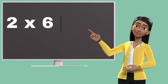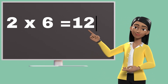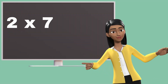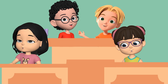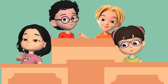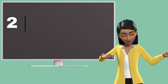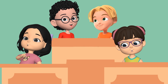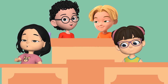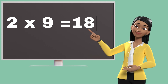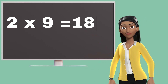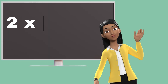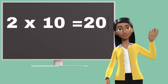Two sixes are twelve. Two sixes are twelve. Two sevens are fourteen. Two sevens are fourteen. Two eights are sixteen. Two nines are eighteen. Two tens are twenty.